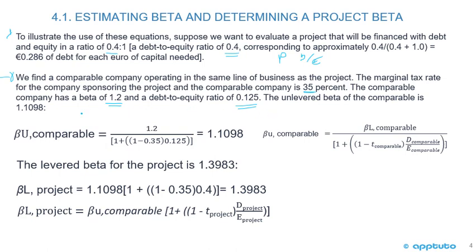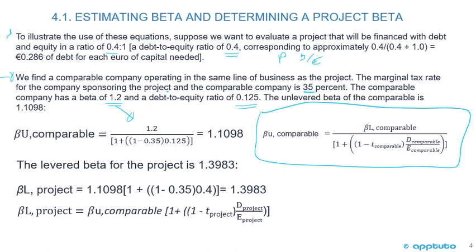To calculate the unlevered beta for the comparable: take the levered beta of 1.2, divide by one plus bracket one minus 0.35 times 0.125, giving us 1.1098. Then to get the levered beta for the project, take 1.1098 and multiply by bracket one plus one minus 0.35 times the project debt-to-equity of 0.4, which gives us 1.3983. That is the beta for the levered project.